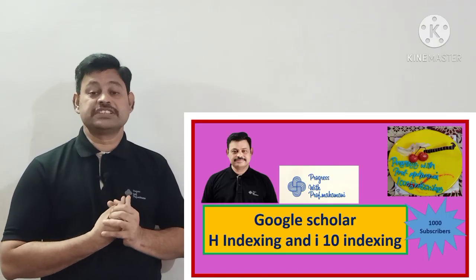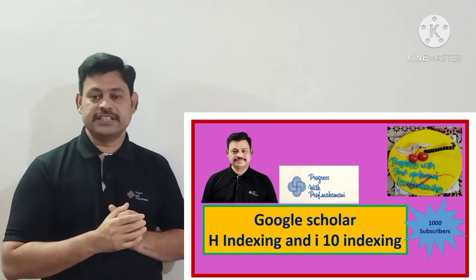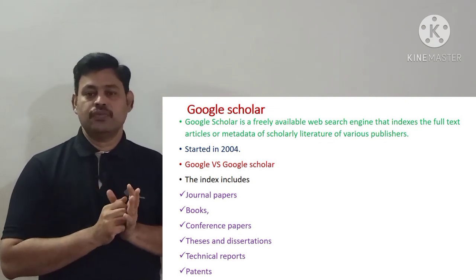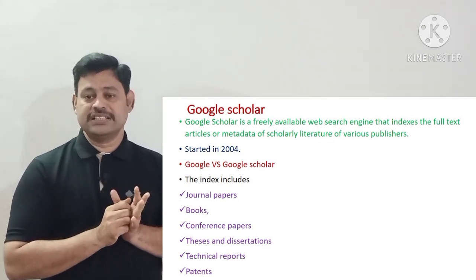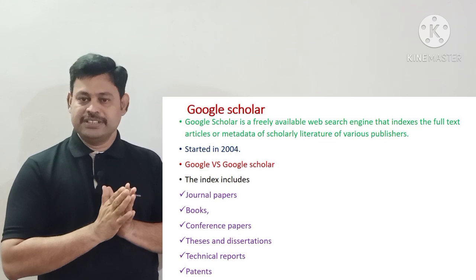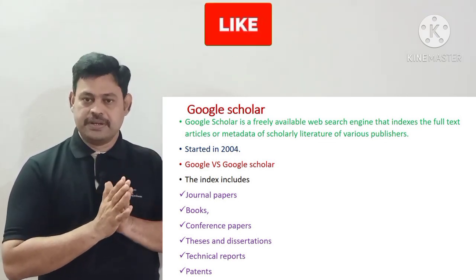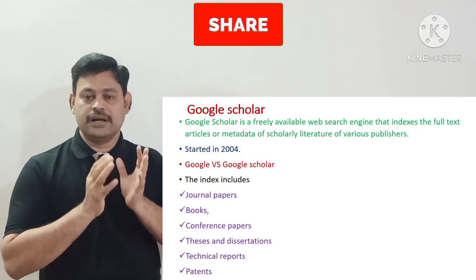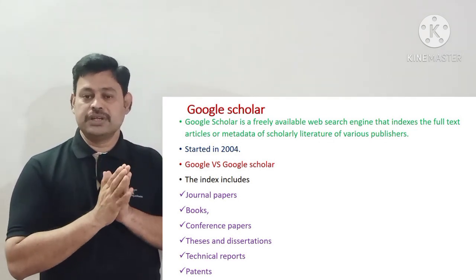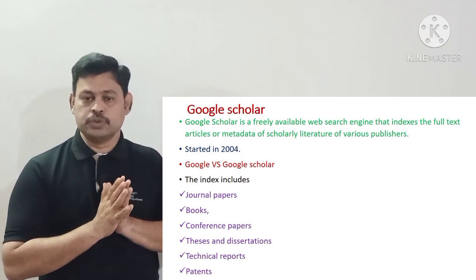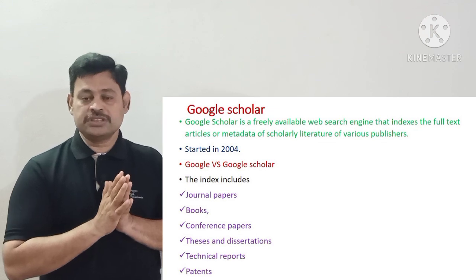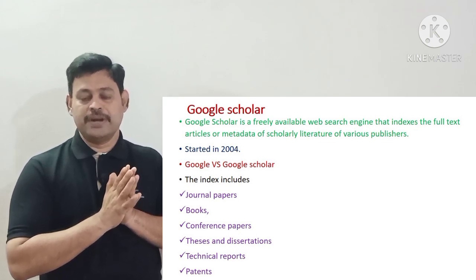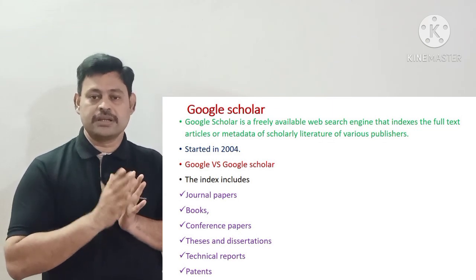In this video we are going to talk about Google Scholar h-indexing and i10 indexing. First of all, what is Google Scholar? Google Scholar is a freely accessible web search engine that indexes the full text or metadata of scholarly literature from various publishers. Metadata means the abstract or some portion of the paper. Google Scholar started in the year 2004. The difference between Google and Google Scholar is that Google lets you search everything, whereas Google Scholar gives access only to scholarly articles. Google Scholar indexes general papers, books, conference papers, theses, dissertations, technical reports, and patents.